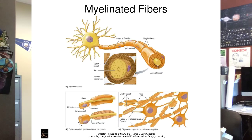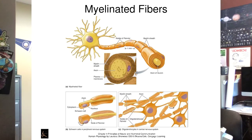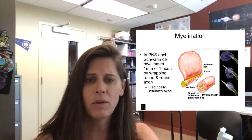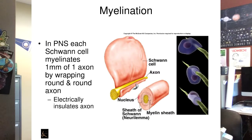There are two types of cells that produce myelination. In the peripheral nervous system — all the nerves that branch off the brain and spinal cord — the cells are called Schwann cells. In the brain and spinal cord, the cells that wrap around axons to produce myelination are called oligodendrocytes. Two different cells, but they produce the same function. The Schwann cell flattens out but you can still see its nucleus as it coils around the axon.